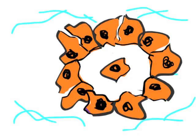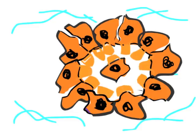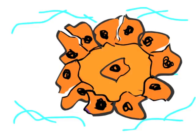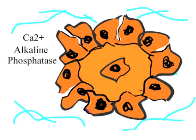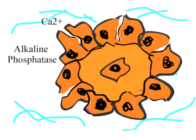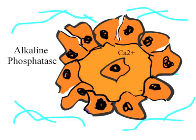These newly formed osteoblasts then release an uncalcified bone matrix known as osteoid. The osteoid is then calcified with the addition of calcium salts and other minerals. The enzyme alkaline phosphatase acts as a catalyst in this process.